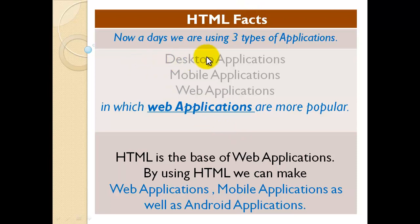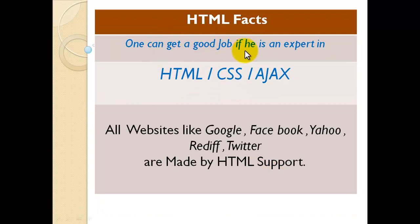Now about HTML facts — nowadays we are using three types of applications: desktop applications, mobile applications, and web applications. Among these, web applications are more popular, and HTML is the base of web applications. By using HTML we can make web applications and mobile applications as well as Android applications. One can get a good job if he is an expert in HTML, CSS, and JavaScript, because all websites like Google, Facebook, and Yahoo are made using HTML. In the next lesson, we will discuss briefly about HTML and HTML practicals. Thank you.